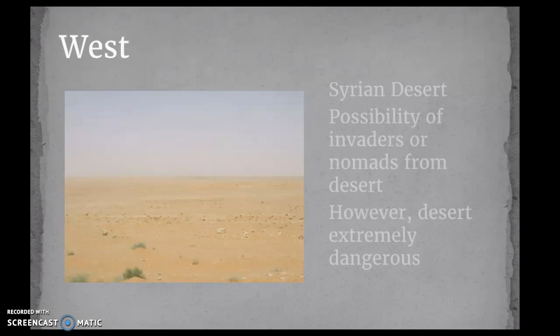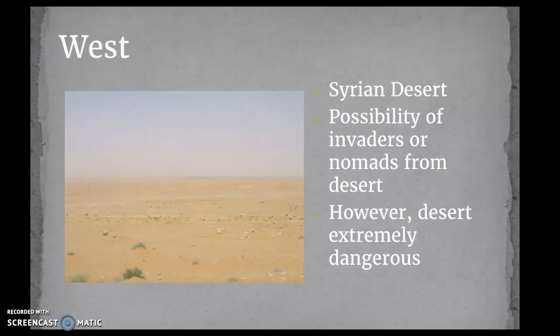In the west — desert. Only desert. The Syrian Desert. Deserts provide a lot of isolation. People can try to get through them and sometimes they're successful, but they're very, very dangerous, so the possibility of invaders is very small. You might have nomadic invaders coming from the desert, but they're extremely dangerous. Which also means that for Mesopotamians, it would be very hard to expand into the west. Going back to the original map, the west is between Mesopotamia and Egypt, which means there is some trade connection through the Mediterranean, but in terms of invasion, there's a lot of protection.